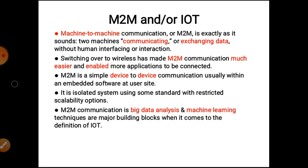Next, M2M and IoT. Machine to Machine, that is M2M — machine-to-machine communication is exactly as it sounds: machines communicating or exchanging data without human interface or interaction. The data can be sent from one place to another, which is called machine-to-machine or M2M communication.